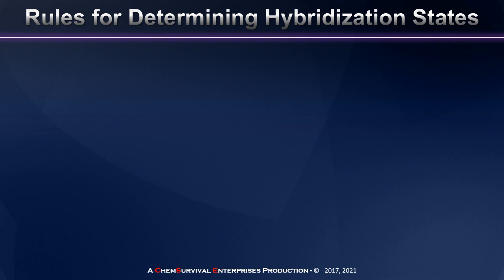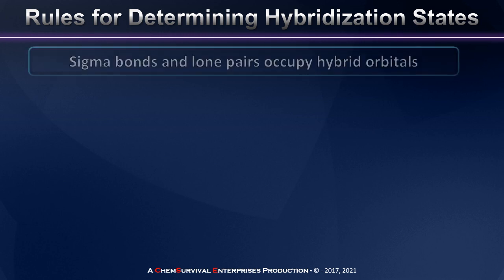In order to determine the hybridization state of any central atom, we really need to only consider three fundamental rules. The first rule is this: sigma bonds and lone pairs occupy hybrid orbitals. However, pi bonds do not.